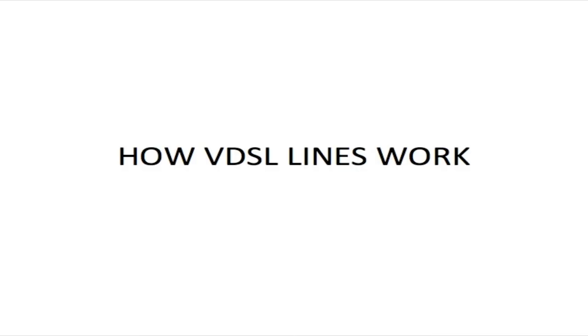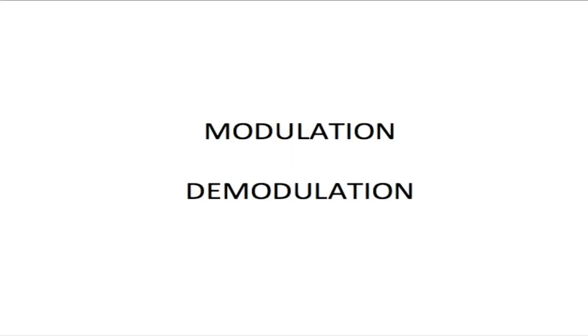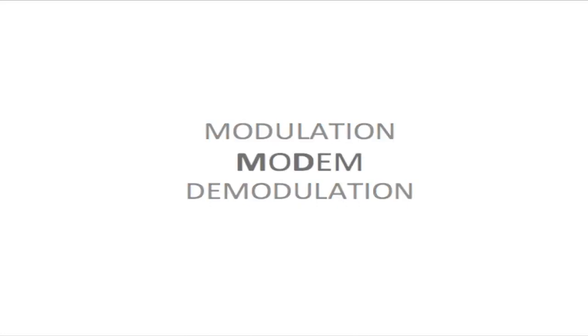Hello, this is Trevor from Telecom Training, and today we're going to be talking about VDSL lines and how VDSL modems work to get internet access to our homes and businesses. The process used by modems to accomplish this task is called modulation and demodulation. The name modem was developed from the words modulation and demodulation — the M in modem is for modulation and the D is for demodulation.